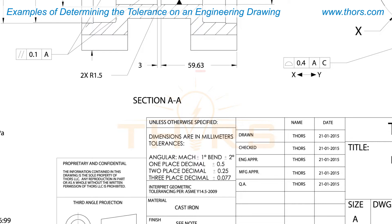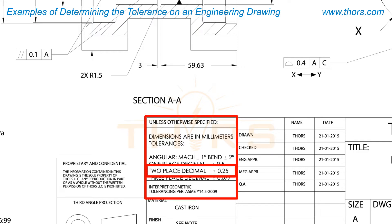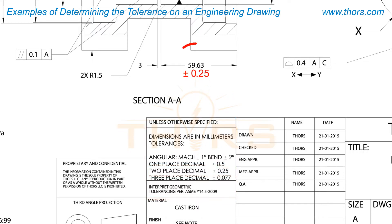Refer to the tolerance information in the title block to find the two-place decimal tolerance value, which is plus or minus 0.25 millimeters. This means the dimension of 59.63 millimeters can fall in the range of 59.38 to 59.88 millimeters.